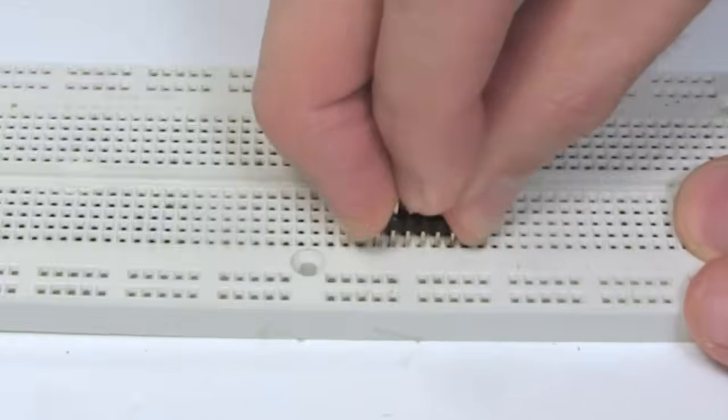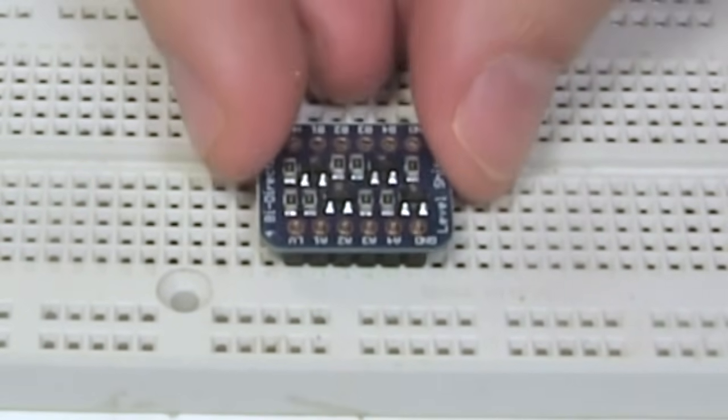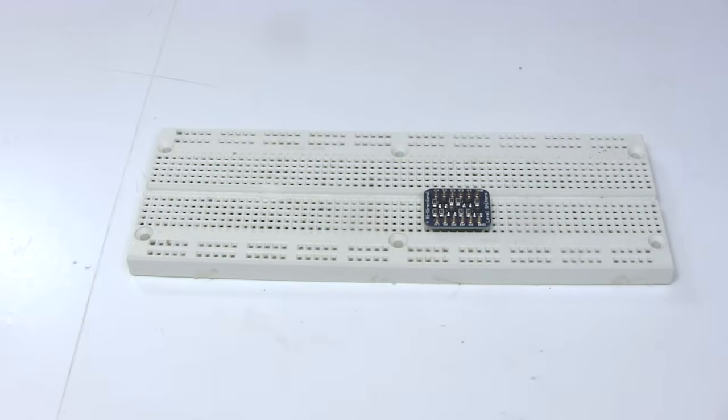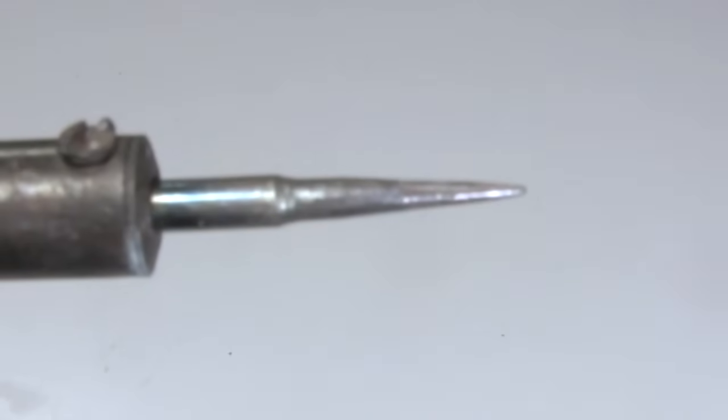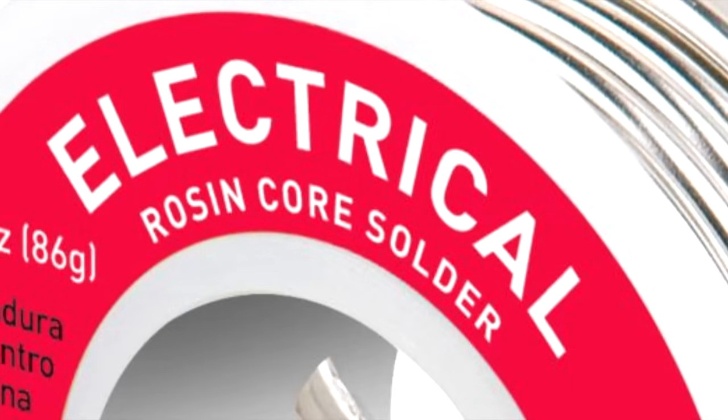To solder the pin headers to the board, one technique is to put the headers in a breadboard. Then, put the board on the pins. That way you can be sure the pins will be on straight. Use a soldering iron with a pointy tip, and some solder that has rosin in it, such as rosin core solder, or in my case this spool has RA written on it, which means rosin activated.